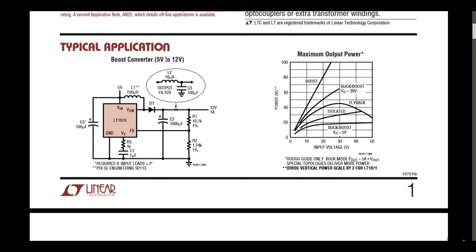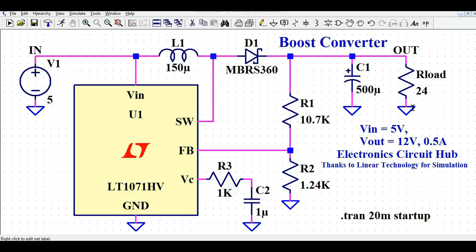Looking at the typical application circuit in the datasheet, they've designed a boost converter from 5V to 12V. The output voltage is 12V at 1 ampere. VIN is connected to 5V with a 100 microfarad capacitor to ground. At the VC pin there is a 1kΩ resistor and 1 microfarad capacitor. The feedback uses a 10.7kΩ 1% resistor and a 1.24kΩ 1% resistor, plus an output capacitor.